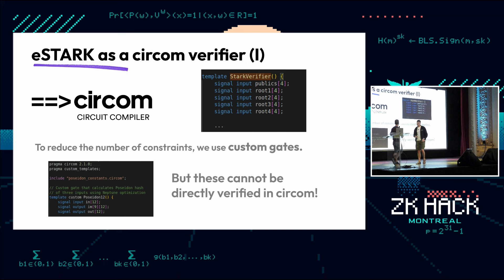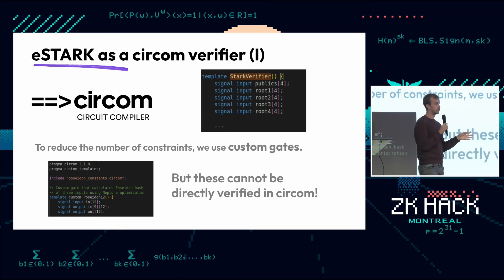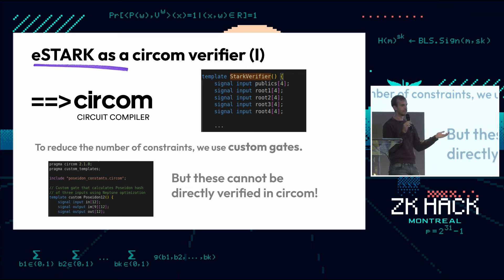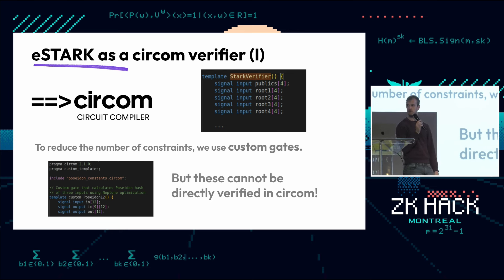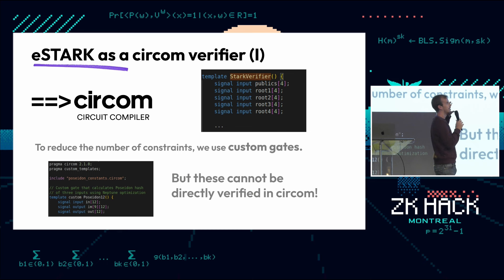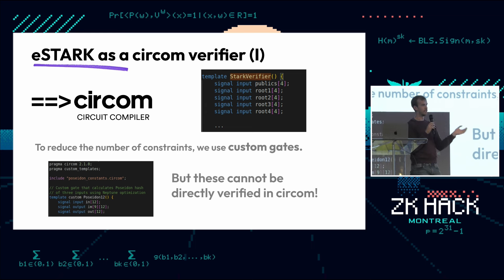I'll explain how we currently verify the STARKs and then what our proposal is for a potentially more efficient alternative. We use two languages: Circom and PIL — both are in-house languages. Circom has been in the web space since 2018 or so; PIL is more recent. What we do right now is use recursion in our Circom so we can prove in multiple batches with a single proof sent on chain. To do that, we need to verify STARKs so we can aggregate them together.